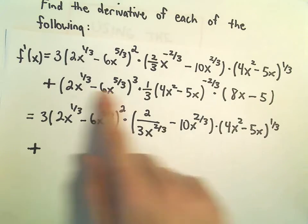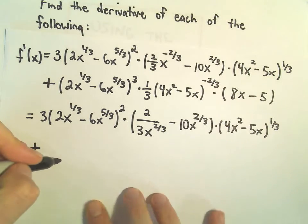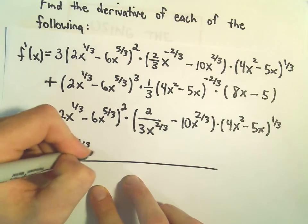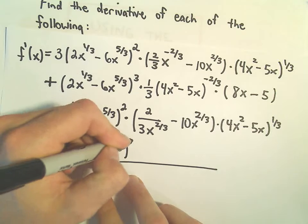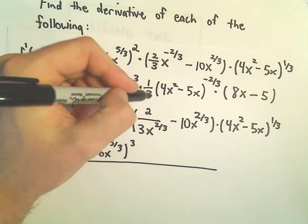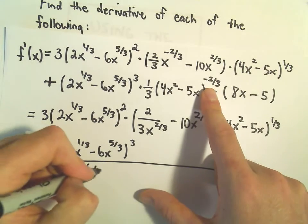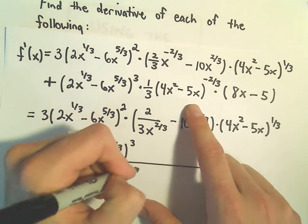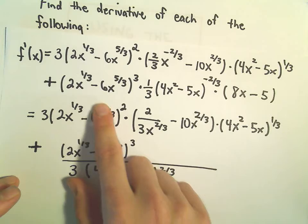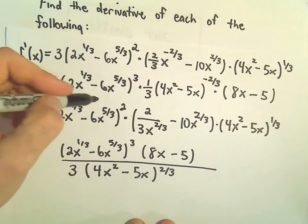All of this stuff in the second line here is being multiplied. Notice we've got a negative exponent, so I'm going to write all of that as a fraction. So the 2x to the 1/3 minus 6x to the 5/3 cubed, we'll leave that part alone. The 3 we can just stick in the denominator. The 4x squared minus 5x to the negative 2/3, well, we can also put that in the denominator and make the exponent positive 2/3. And then we would be left with 8x minus 5. And I think that's where I would finish it here.